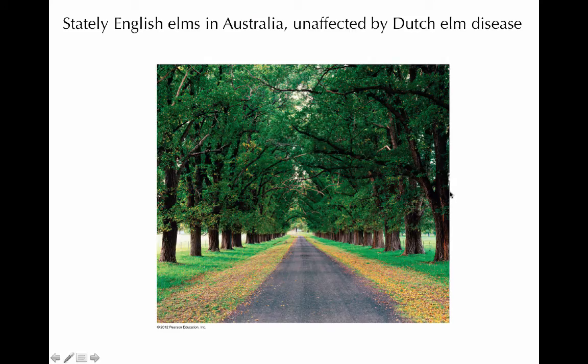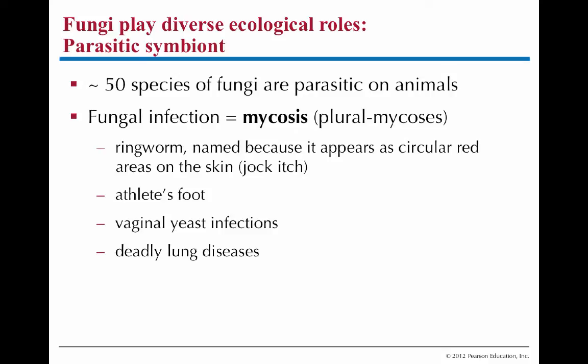There have been major plant wipeouts from fungal infections. English elms in Europe and most of North America are completely gone due to Dutch elm disease, a fungal infection. Because the planted trees were mostly clonal — genetically identical — when the fungus struck, it wiped them all out. The fungus is not in Australia, so those plants are fine, but introducing it there could easily wipe out all their trees as well.